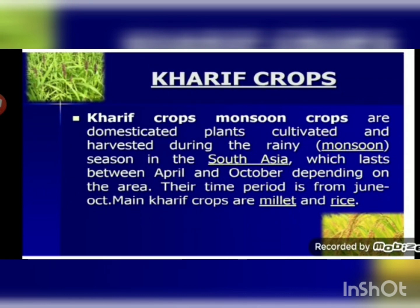Different types of crops require different climatic conditions, so not all crops are grown throughout the year. According to the requirements of climatic condition, temperature, and photoperiod for the growth and completion of their life cycle, crops are classified into Kharif crops and Rabi crops.